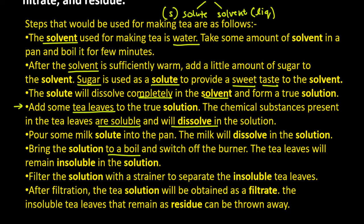Then, you can write the process where you filter it, because there were words like filtrate and residue. Filter the solution with a strainer to separate the insoluble tea leaves. After filtration, the tea solution will be obtained as a filtrate, which is the useful part. The tea leaves left behind are the residue, which can be thrown away.